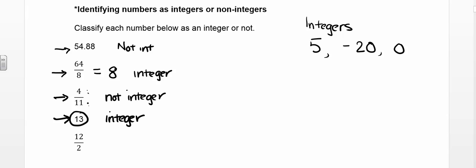And then our last one, 12 halves. Again, can we reduce that fraction? We sure can. 12 divided by 2. 2 goes into 2 once. 2 goes into 12 6 times. So we just have 6. And 6 is an integer. So that's how you can identify whether something is an integer or not.